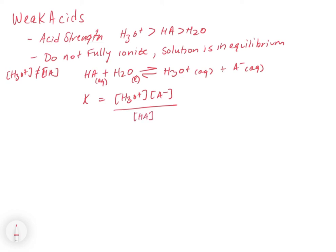We're going to get the concentration of HA on the bottom. And this K gets a special K, it's called the acid dissociation constant. So Ka is equal to the acid dissociation constant.